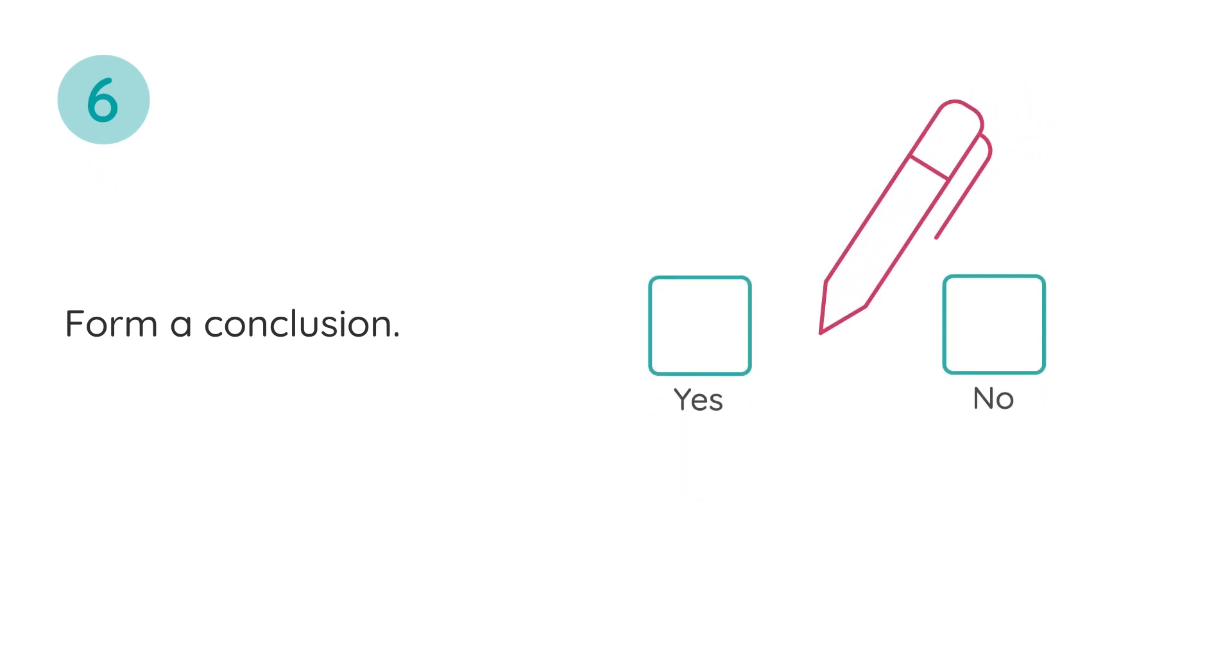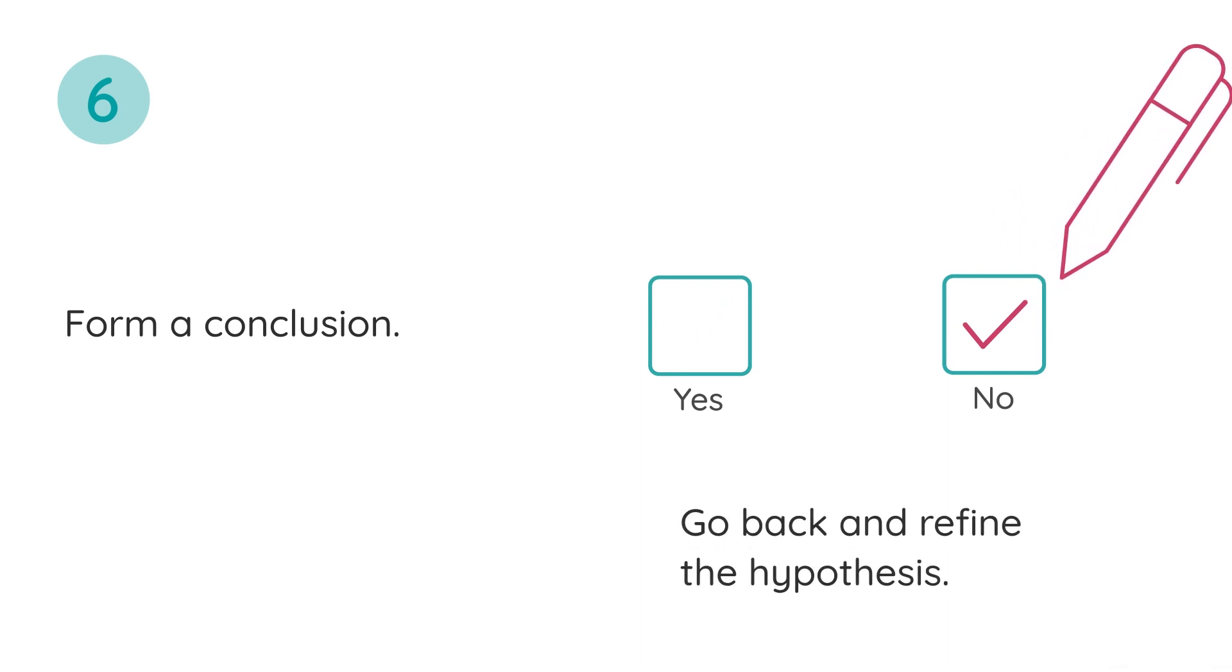The sixth step is forming a conclusion. Was your hypothesis correct? Yes or no? And explain why. If the hypothesis was correct, you proceed to the next step. If the hypothesis is incorrect, it needs to be refined and you go back to step two.